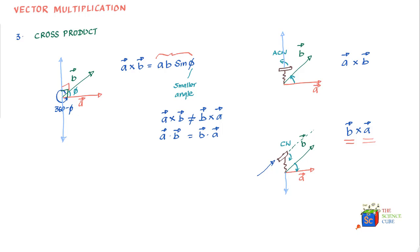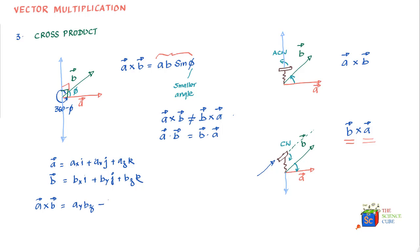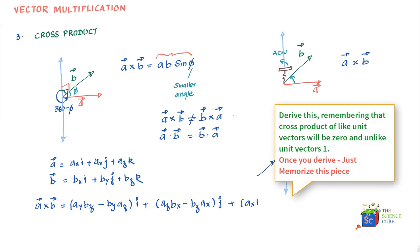Now let's figure out the cross product in coordinate notation. If vector a and vector b are written in component form, then a cross b equals (a_y·b_z − b_y·a_z) î plus (a_z·b_x − b_z·a_x) ĵ plus (a_x·b_y − b_x·a_y) k̂.